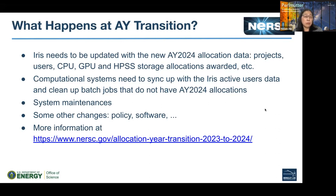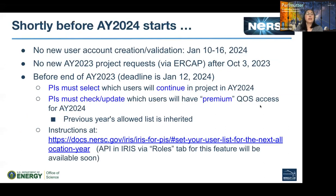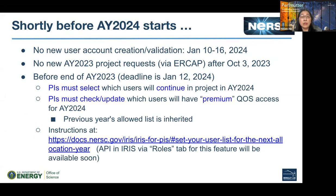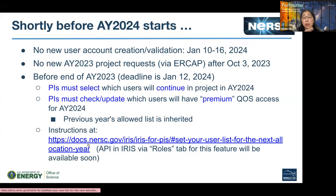We also clean up jobs that don't have continued allocations. Systems sometimes have scheduled maintenances on that day and we may have policy and software changes. We have published a transition webpage with more details. Before AY 2024, there were no new URCAP project requests after October 3rd. The week before AY 2024, no new user account creation or validation. PIs have a deadline of January 12th to select which users will continue in their project in AY 2024, and also to select which users have premium access.